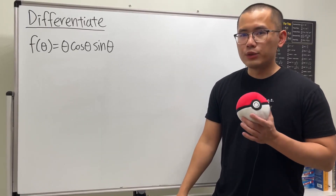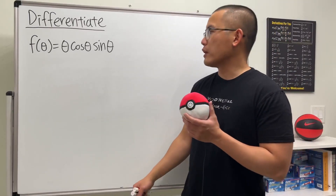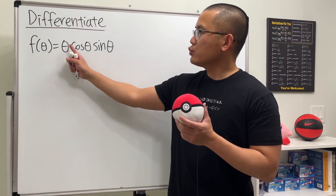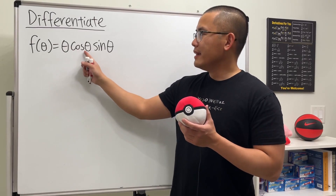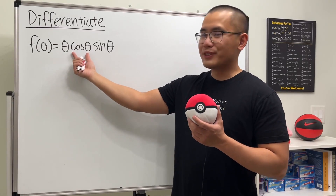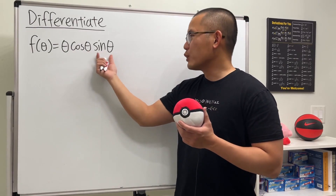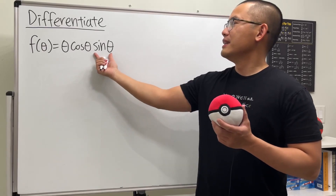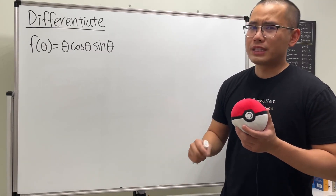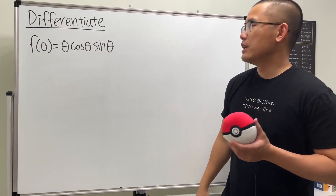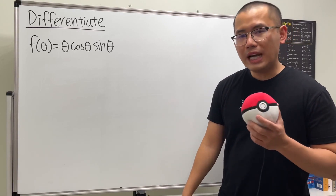This time we are going to differentiate a product of three functions. The first one is theta, the next is cosine theta, and the third one is sine theta. So it's really a product of three functions, and we still have to use the product rule.